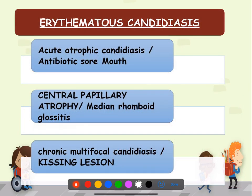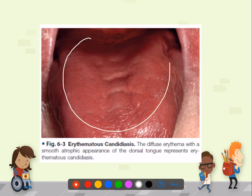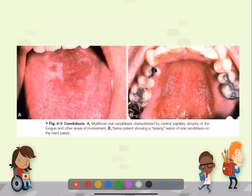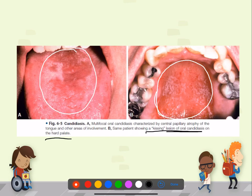Erythematous candidiasis is of three types: acute atrophic candidiasis (antibiotic sore mouth), central papillary atrophy or median rhomboid glossitis, and chronic multifocal candidiasis or kissing lesion. Erythematous candidiasis presents as a smooth atrophic area on the dorsum of the tongue. In multifocal candidiasis, the tongue lesion touches the palate, producing the same type of lesion there — hence it is called a kissing lesion.